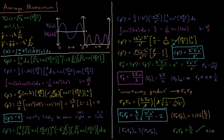For momentum, we have the integral from 0 to l with respect to x. The complex conjugate of the wavefunction is just the wavefunction itself because there are no imaginary parts — no i, no square root of minus 1. So we have square root of 2 over l times sine(nπx/l), multiplied by the momentum operator minus i h-bar d/dx acting on the wavefunction, square root of 2 over l times sine(nπx/l).